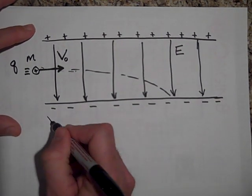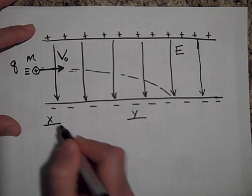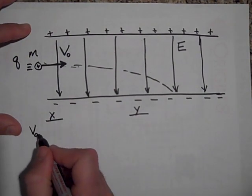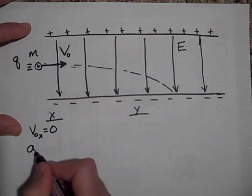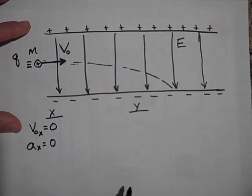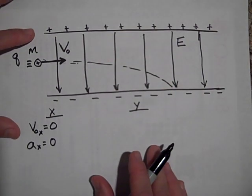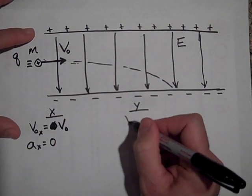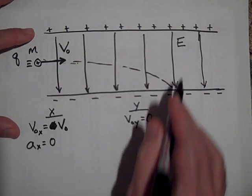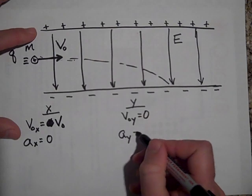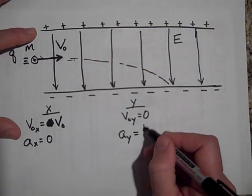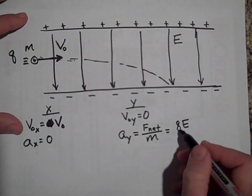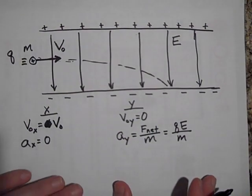Okay, well, let's break it into X and Y components. And so let's just list all our knowns in both of these. We know that the V initial in the X direction is - however, there will be no acceleration in the X direction because the force on this will just be straight downward. V in the X direction is V naught rather. There is no V initial in the Y direction because it's just going straight across. A in the Y direction will be F net, which will be QE, F net over M. Let me just say it's QE all over M.